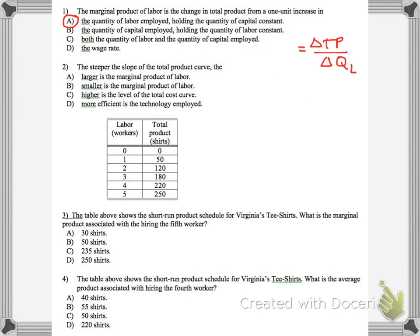We have the steeper the slope of the total product curve, the blank. Well, let's read the first one. The larger the marginal product of labor. That sounds right, and here's why it's actually the right answer.